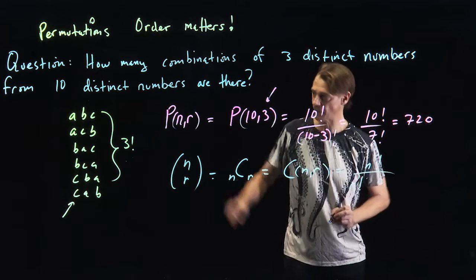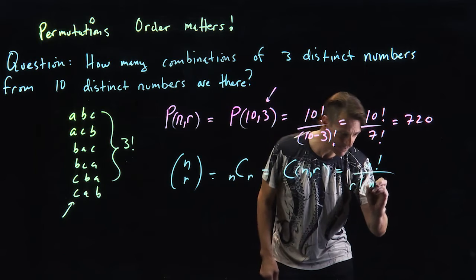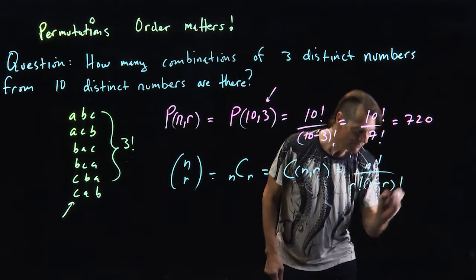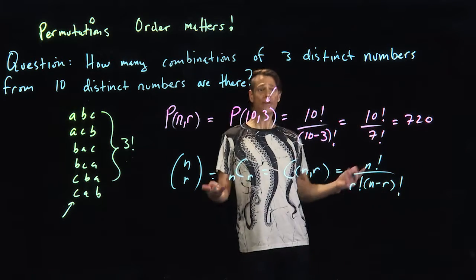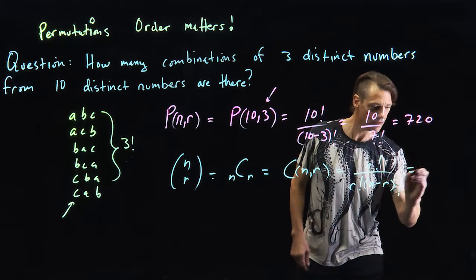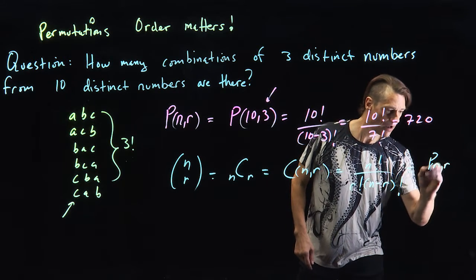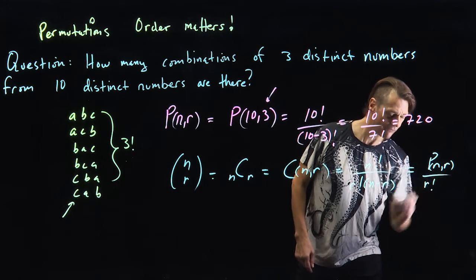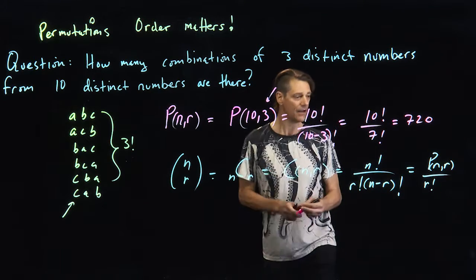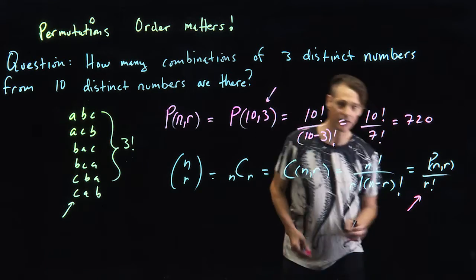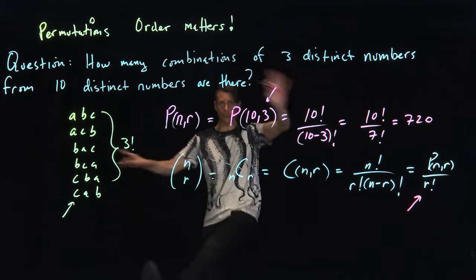Divide out that r factorial, and then it's going to be n minus r factorial. And you'll notice this is simply P(n,r) divided by r factorial. As we talked about, this was generating the orders for those things. So let's do an example.